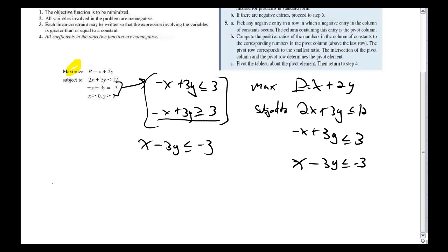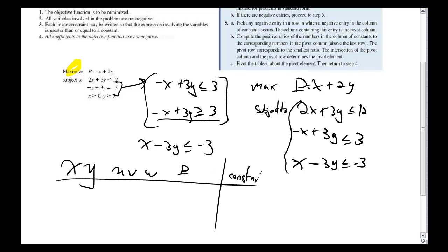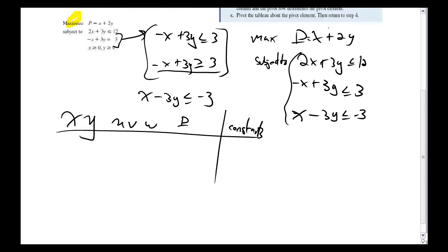So now I've got my thing. I'm maximizing my p-equation, x plus 2y. And now it's subject to these guys. 2x plus 3y is less than or equal to 12. Minus x plus 3y is less than or equal to three. x minus 3y is less than or equal to negative three. So now let's set up our simplex tableau. I've got x, I've got y. I have three equations here. So I'm going to have u, v, and w. And of course, p. And then my constants.